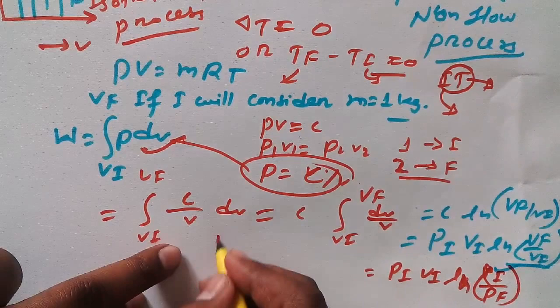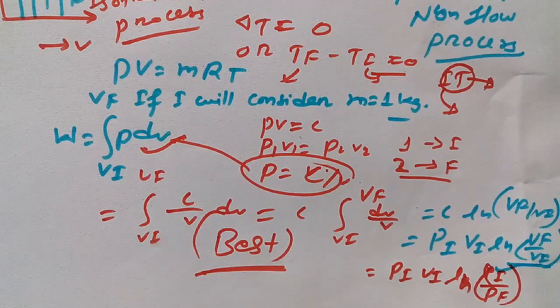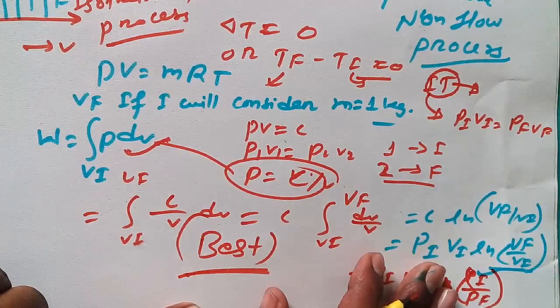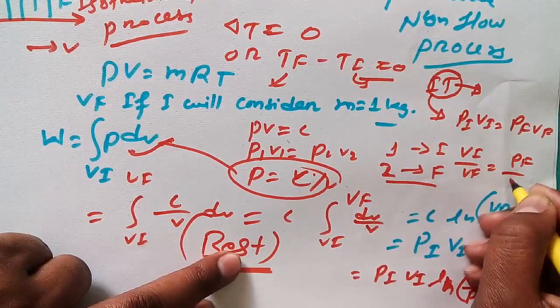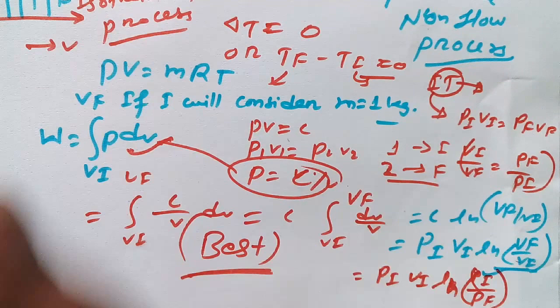Now remember, my dear friend, this is one of the best concept, one of the best trick I am going to share with you. Remember this formula while solving any competitive examination, because most of the time we get confused about how to do it. That means we know PIVI is equal to PFVF. Now VI upon VF is equal to PF upon PI. If this is this, that means this is reverse.